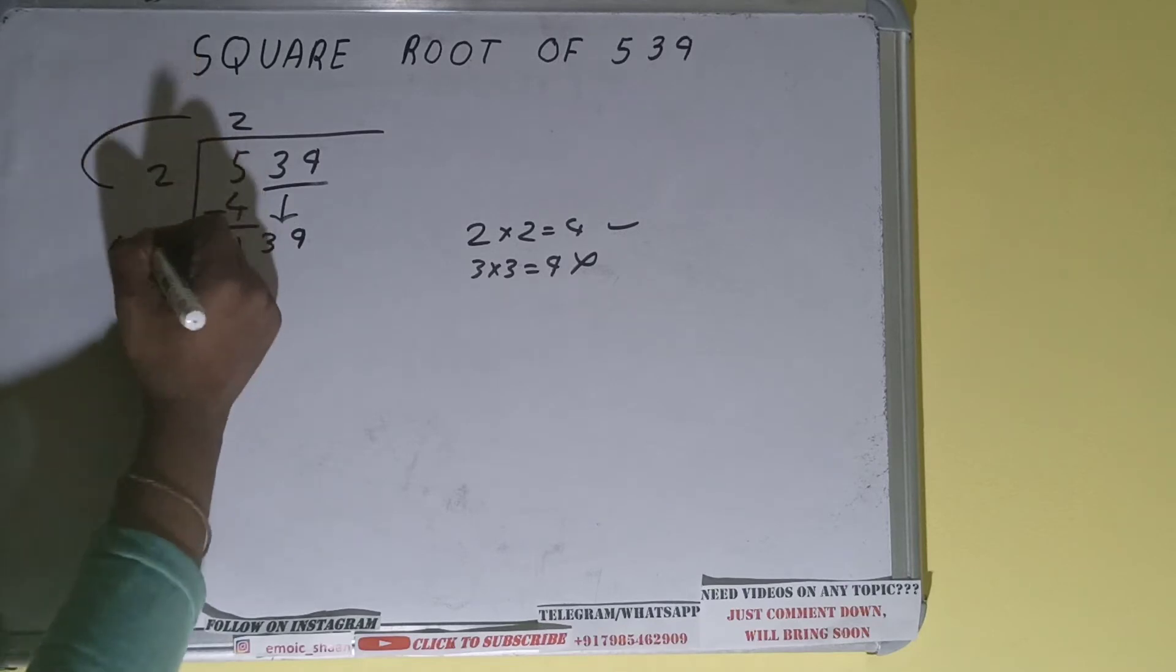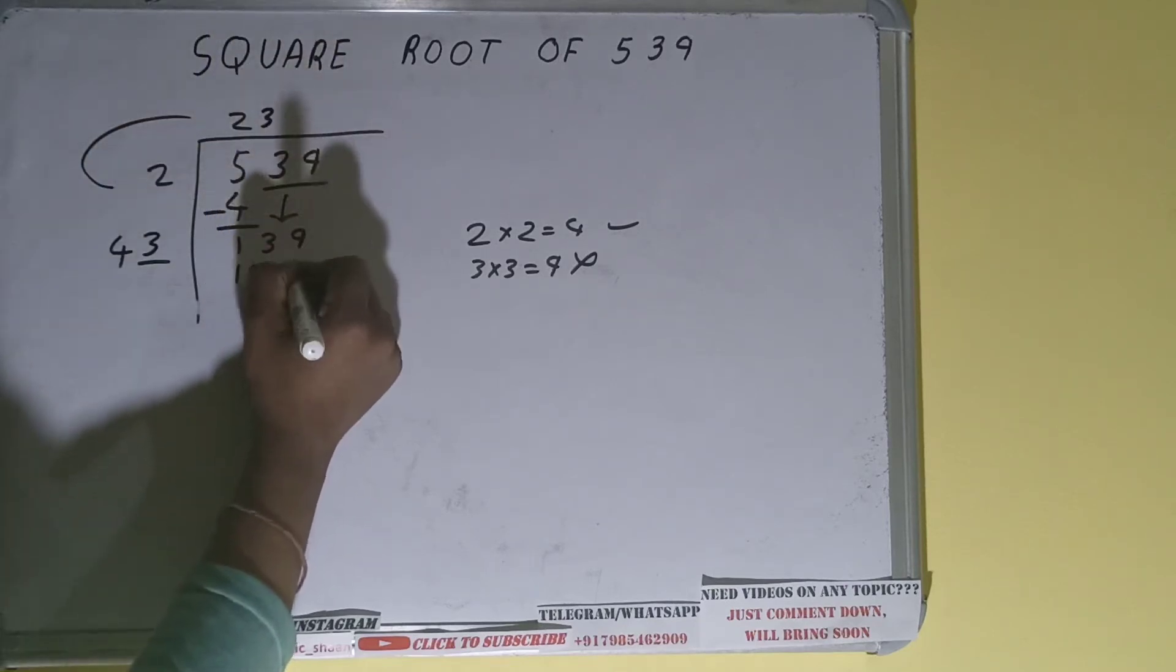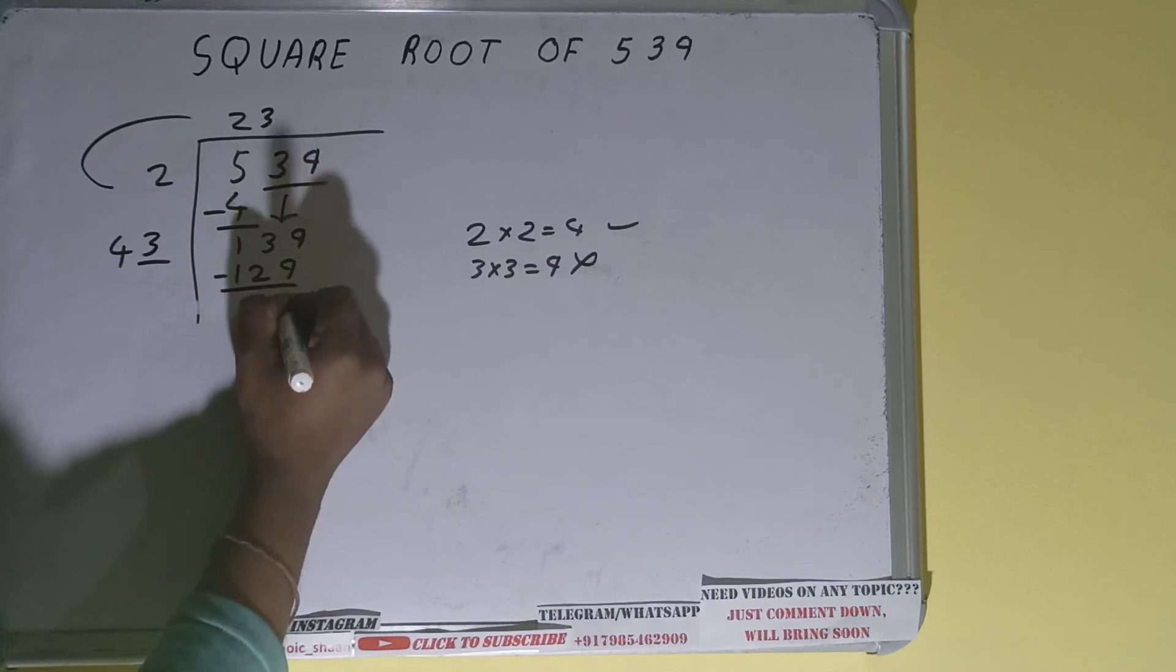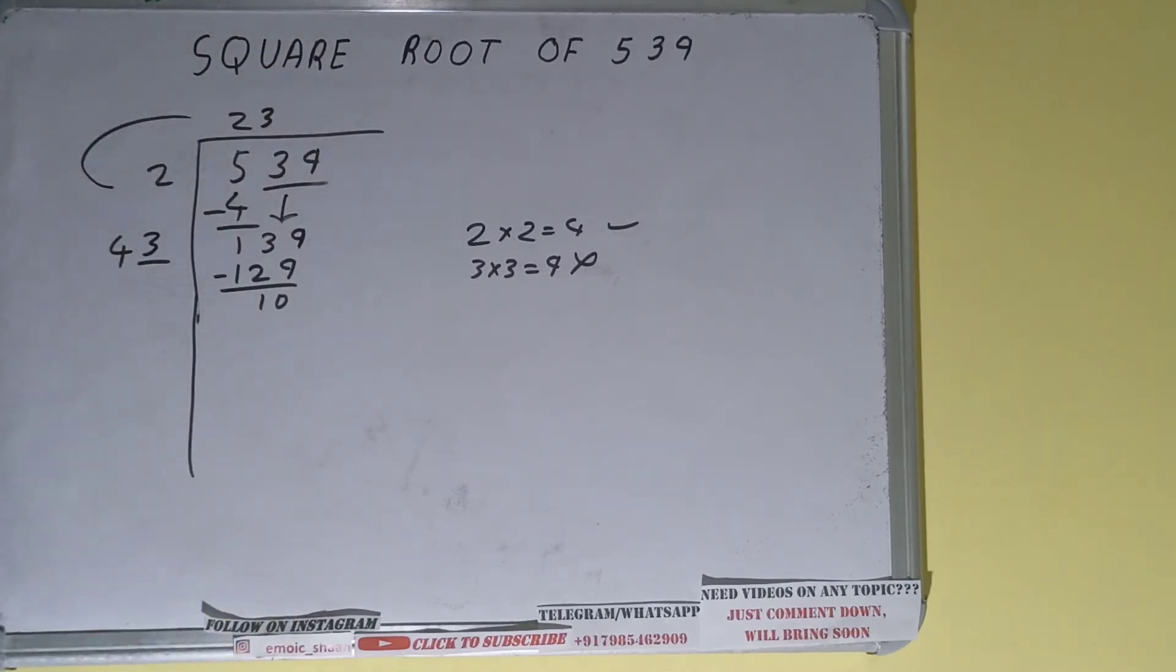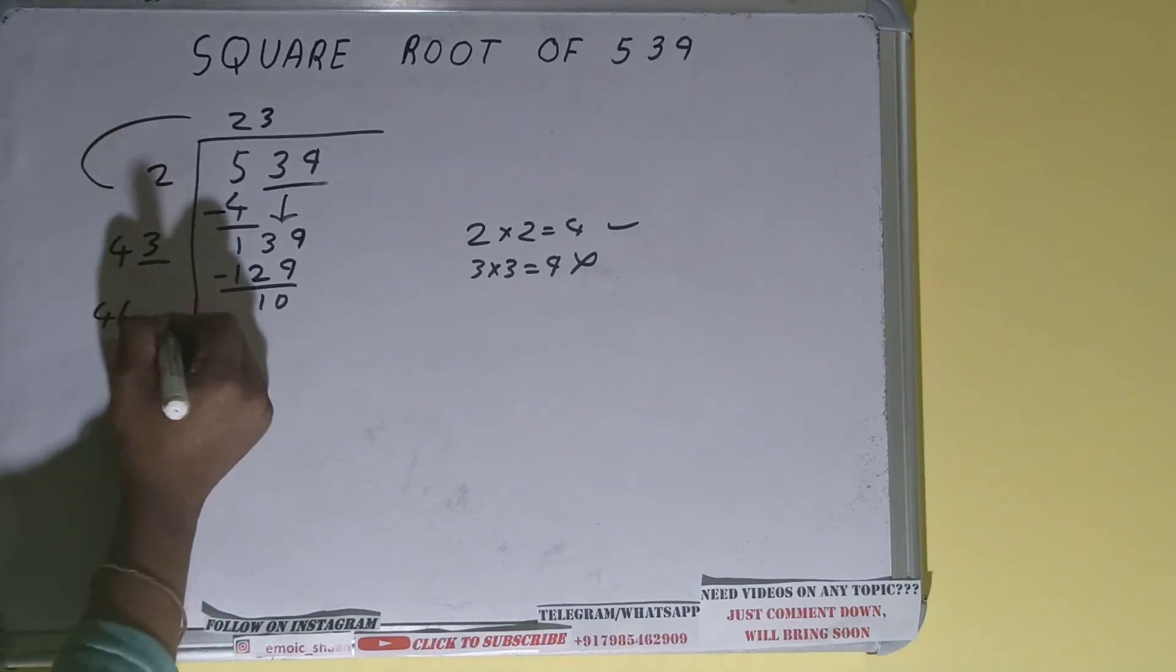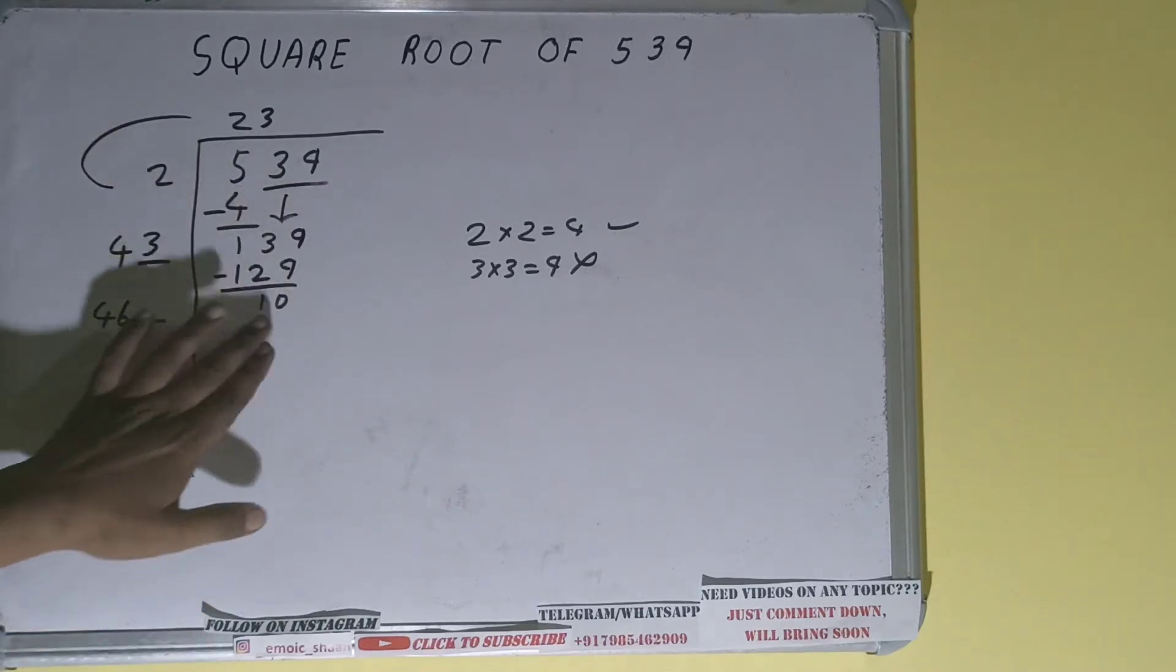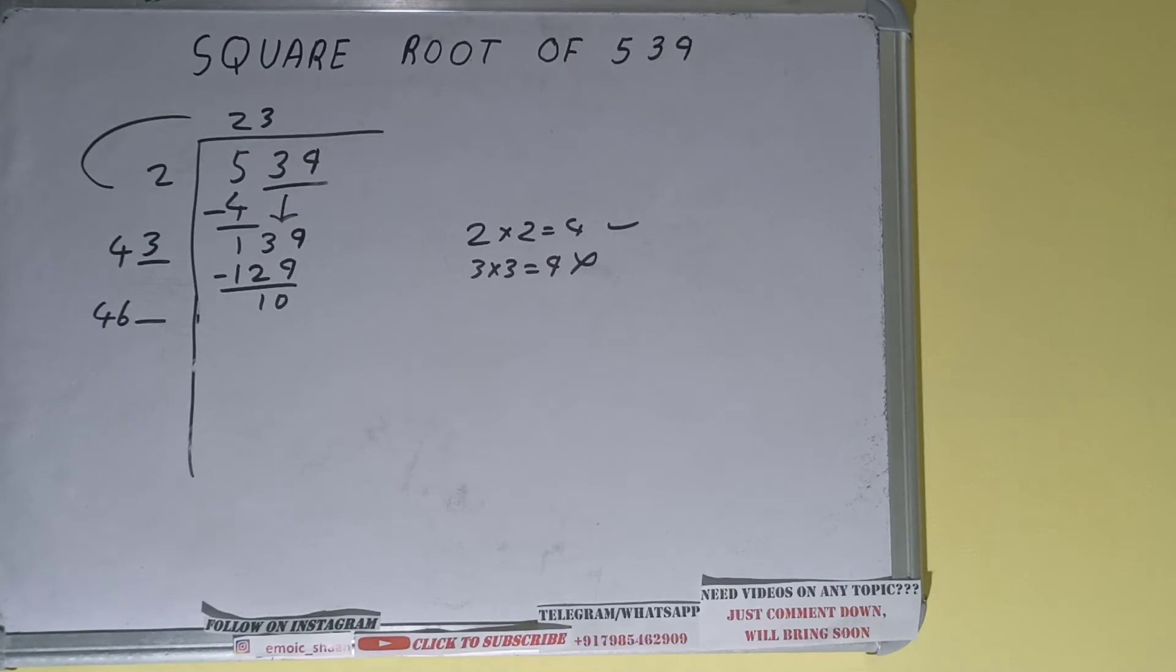...to write here also. So three will work. Three here and three here will give 129, and on subtracting 10 will be left. Now 43 into three we did, so add also. 43 plus 3 will be 46, and one digit extra. And this number we need to make it big so that we can divide, but...